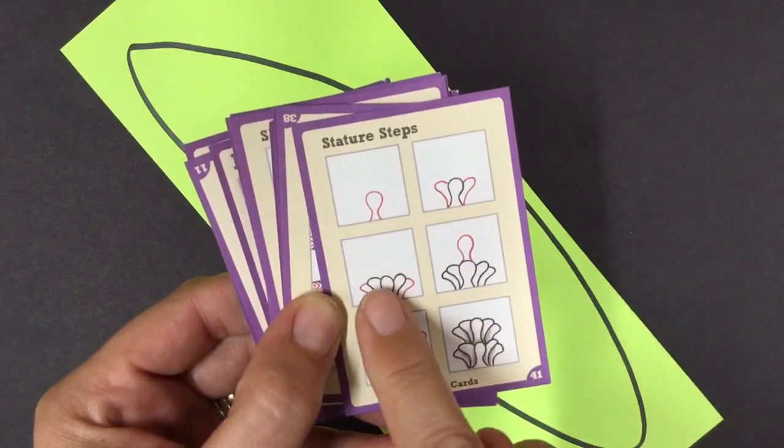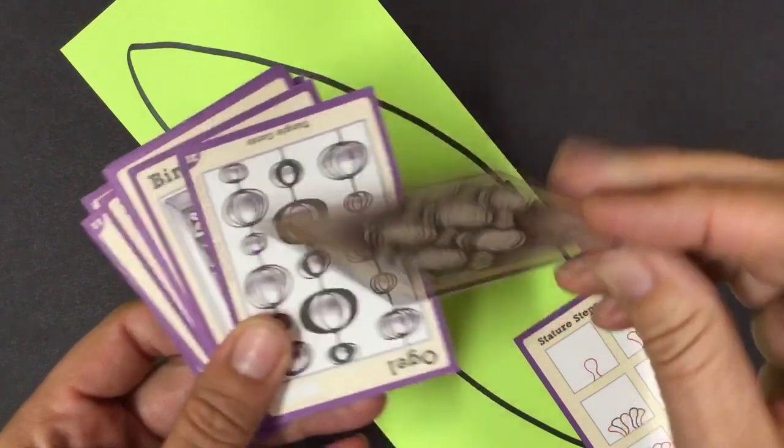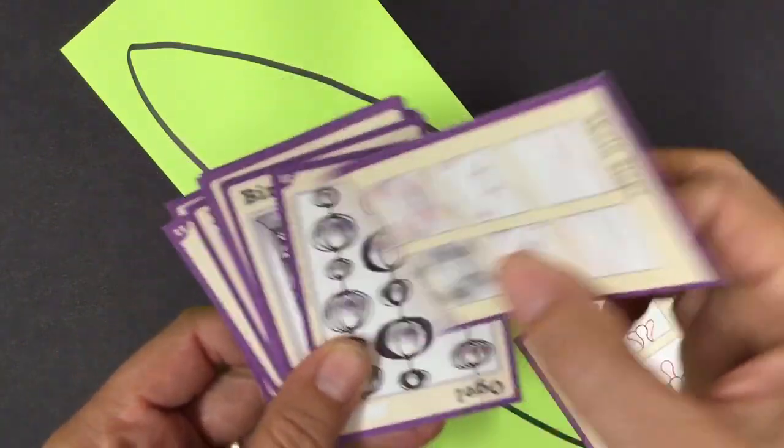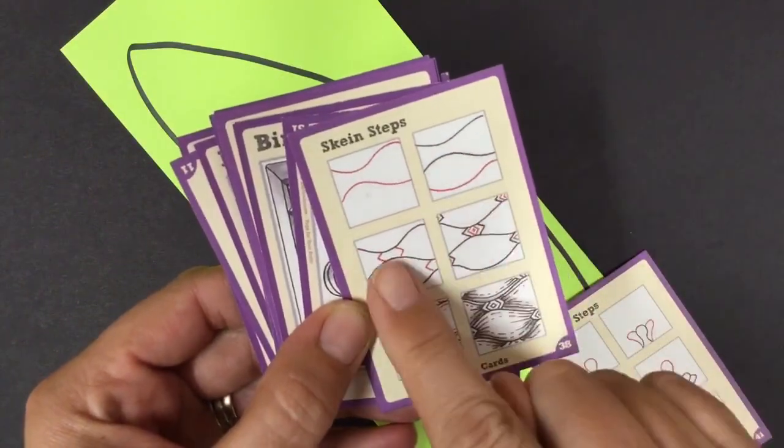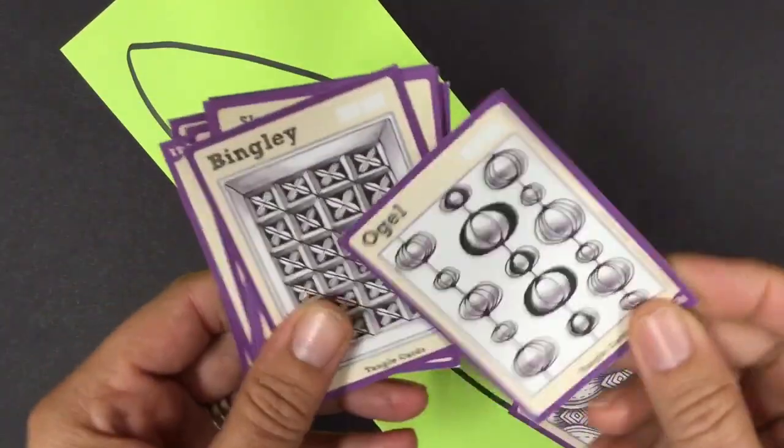The red always shows you what to add next. So here's one that looks like this, and then when you flip it over it will show you step by step by step how to make it. Now do you have to use the Zentangle cards?